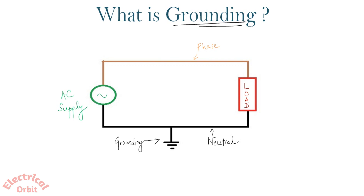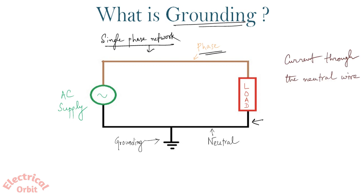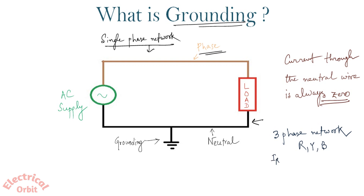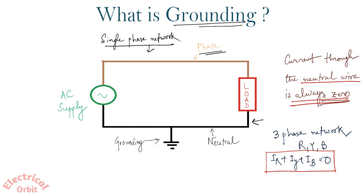Now come to the concept of grounding. This is a schematic diagram of a single-phase network where the yellow part is phase and the black part is neutral. Usually what we know is that current through the neutral wire is always zero, because in a single-phase network, if we consider a three-phase network with three phases R, Y, and B, the currents corresponding to these phases are IR, IY, and IB, and we know IR plus IY plus IB is equal to zero.